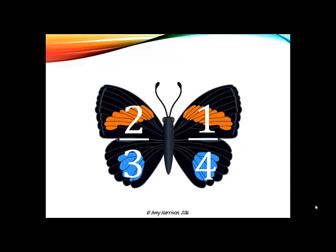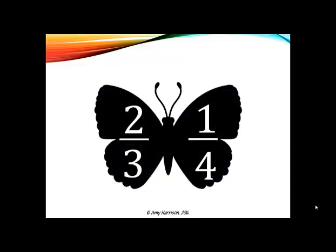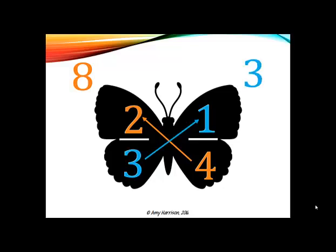We start with our butterfly and our two fractions, 2 thirds and 1 fourth. Then we multiply the diagonals. 4 times 2 gives us 8, and 3 times 1 gives us 3.